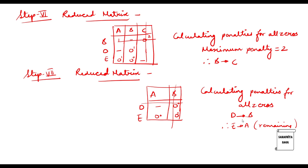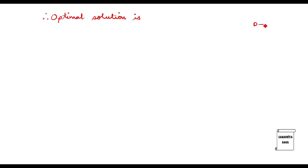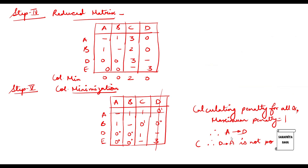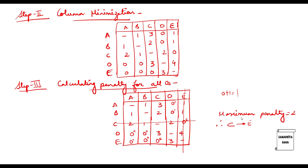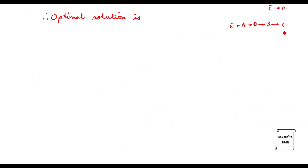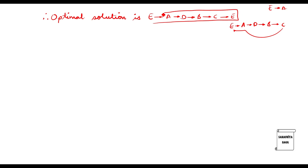Now let's write down the optimal solution. We have D to B, and B is going to C. We know E to A. We had A to D. And we know C to E is the last allocation. So the route is: E → A → D → B → C, and obviously the salesman returns back to his own city, so E is the last city.